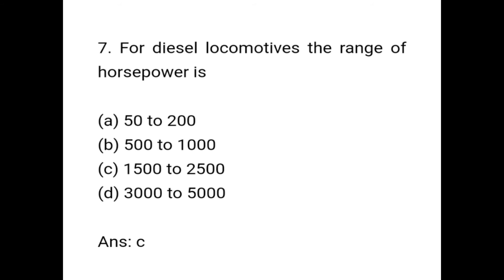Question 7: For diesel locomotives, the range of horsepower is — 50 to 200, 500 to 1000, 1500 to 2500, 3000 to 5000. The correct answer is option C: 1500 to 2500.